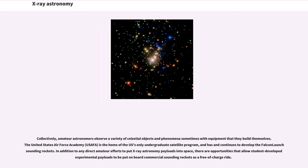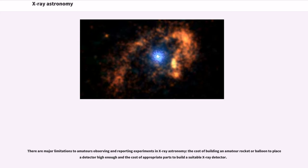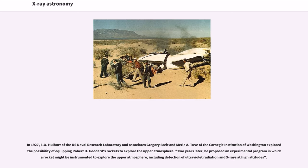Amateur astronomers observe a variety of celestial objects and phenomena. There are opportunities that allow student-developed experimental payloads to be put on board commercial sounding rockets. There are major limitations to amateurs observing and reporting experiments in X-ray astronomy: the cost of building an amateur rocket or balloon and the cost of appropriate parts to build a suitable X-ray detector. In 1927, E. O. Hulburt and associates explored the possibility of equipping Robert H. Goddard's rockets to explore the upper atmosphere. Two years later, he proposed detection of ultraviolet radiation and X-rays at high altitudes.